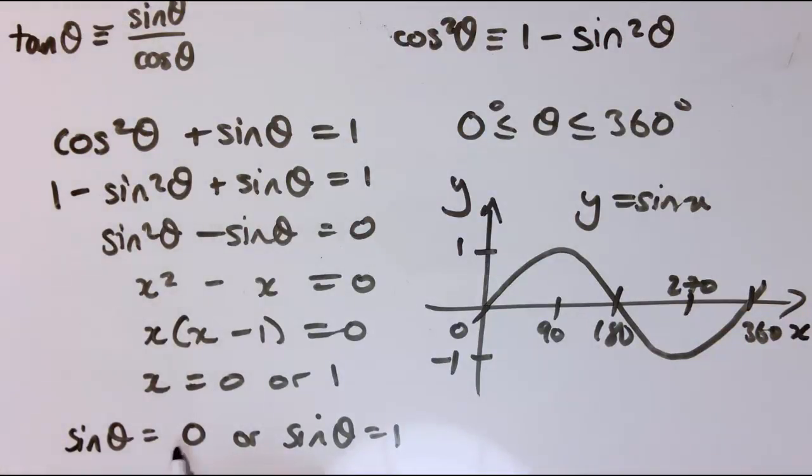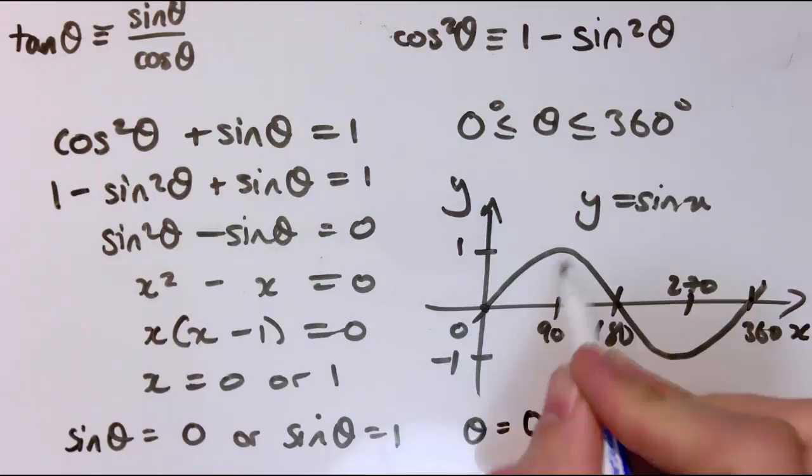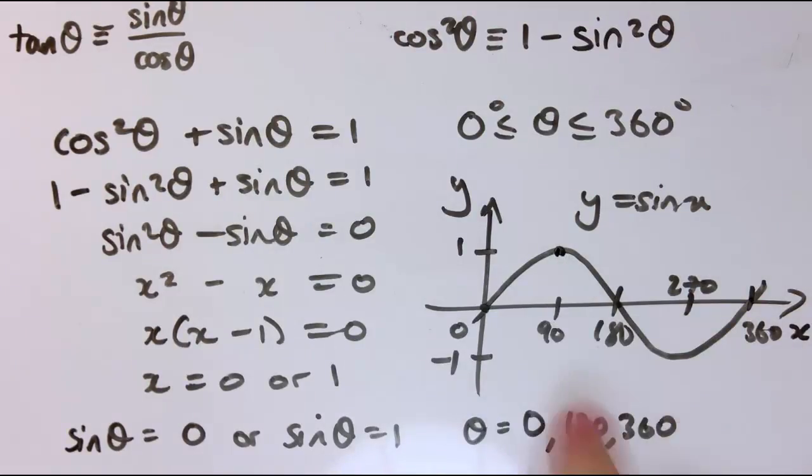So actually, I don't think I need a calculator here. The places where sin θ equals 0 in this range, well, that would be θ equals, well, there's 1 here, 0, here at 180, and here at 360. And also, where is it equal to 1? Actually, just at this one value here at 90 degrees.